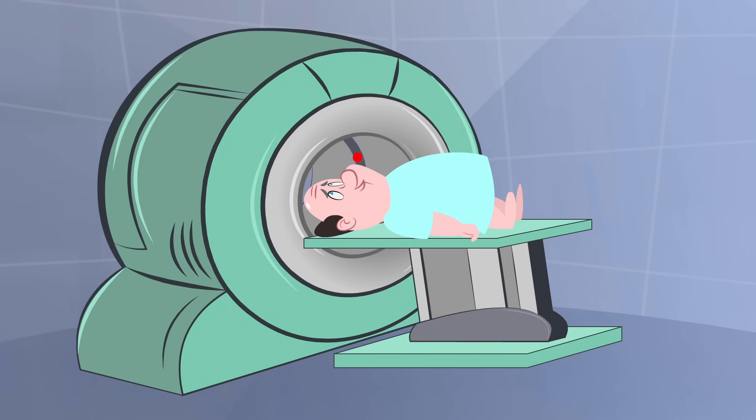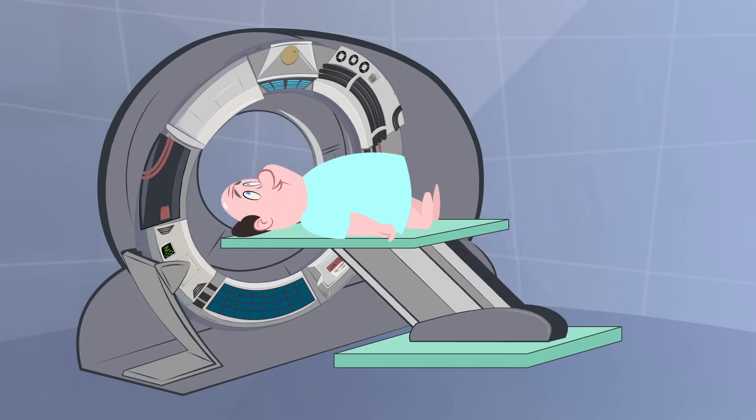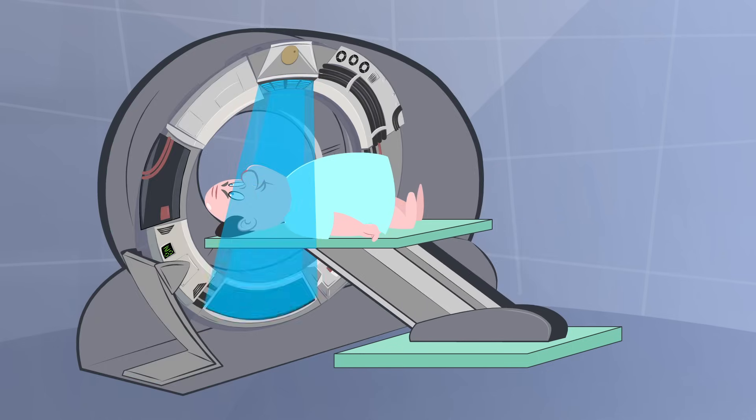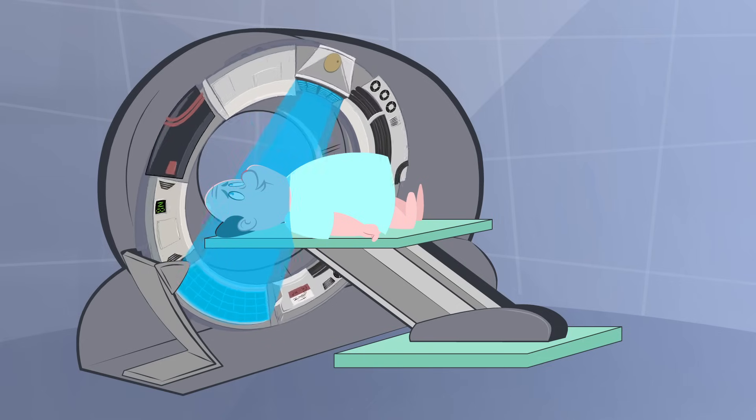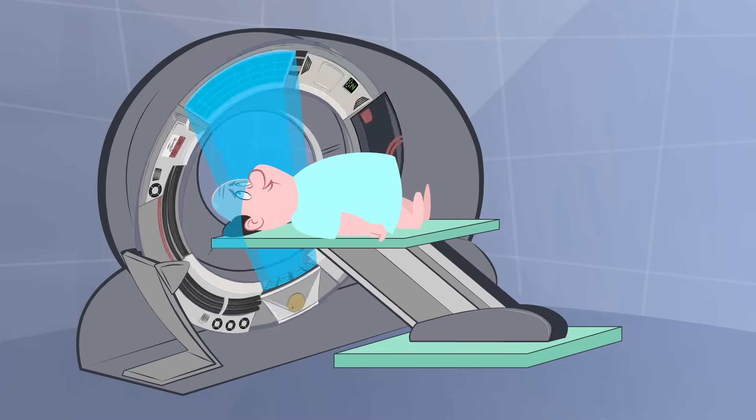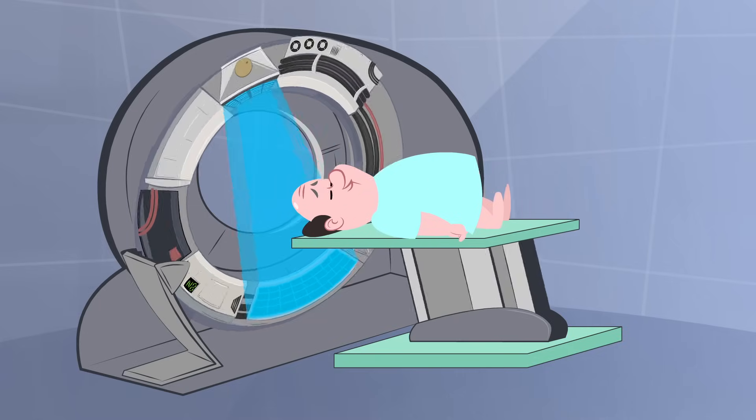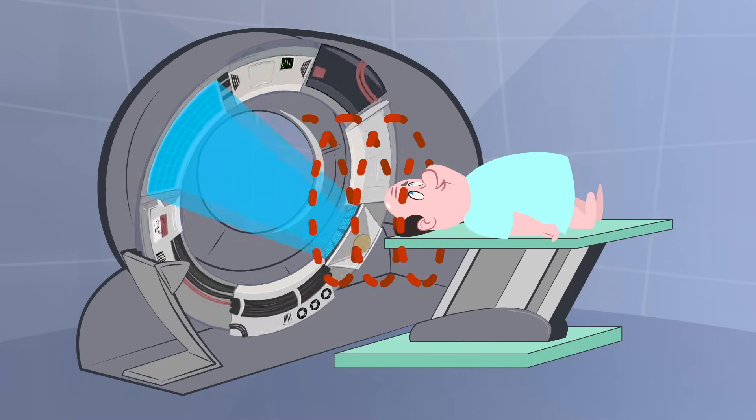A CT scanner works by sending a fan, or cone, of X-rays through a patient to an array of detectors. The X-ray beam is rotated around the patient and often also moved down the patient's body, with the X-ray source tracing a spiral trajectory.